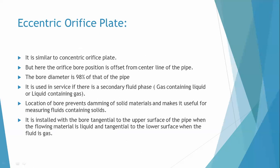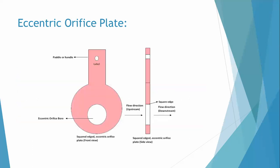In the eccentric orifice plate, the position of the orifice is offset from the center line of the pipe. Unlike the concentric orifice plate where the center line of the pipe coincides with the center of the orifice, here the orifice hole is offset. Looking at the diagram, the center line of the pipe is offset from the orifice hole.